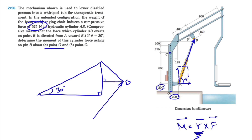I'll put the link in the description below if you need to refresh on finding the moment using the 2D shortcut. We need the force in x and y components, and the vertical distance for each — in this question we have the 200. But first, let's figure out angle alpha, because that's the hardest part of this question. I'll clean up the figure — it might get a bit messy, but I'll use different colors.